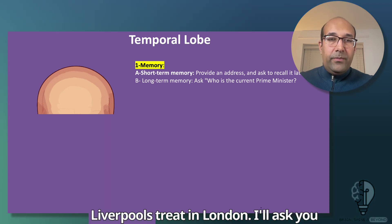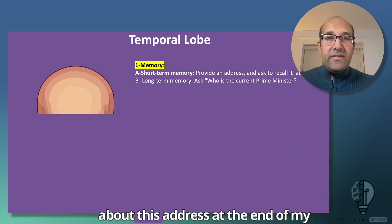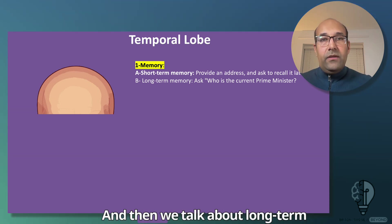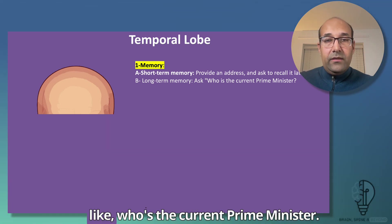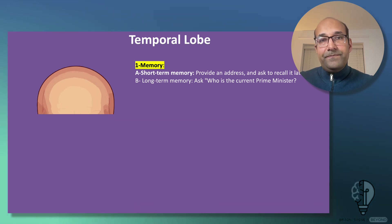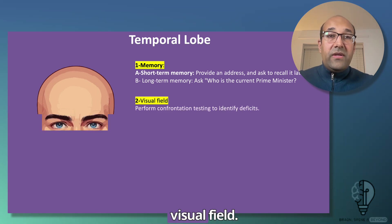For example: '30 Liverpool Street in London — I'll ask you about this address at the end of my examination.' For long-term memory, we can ask questions such as who the current prime minister is.